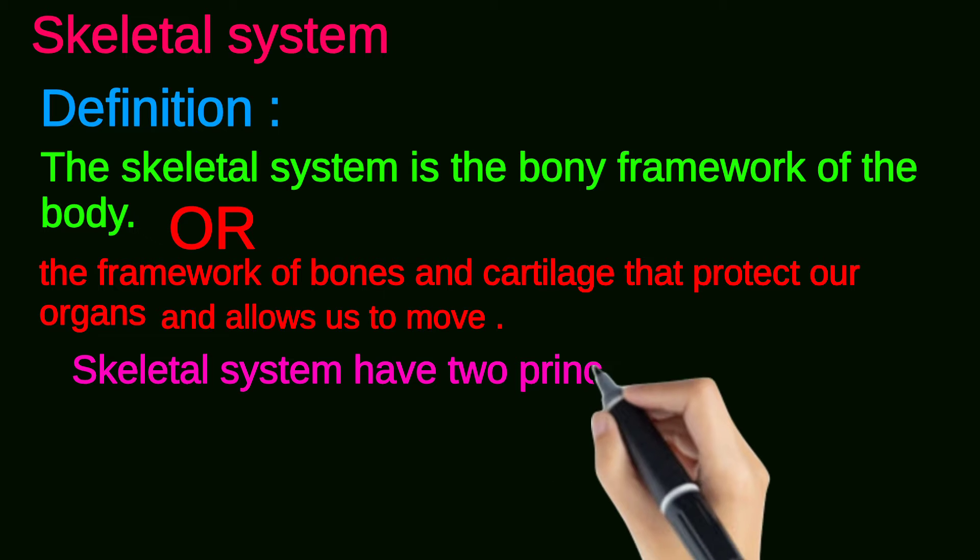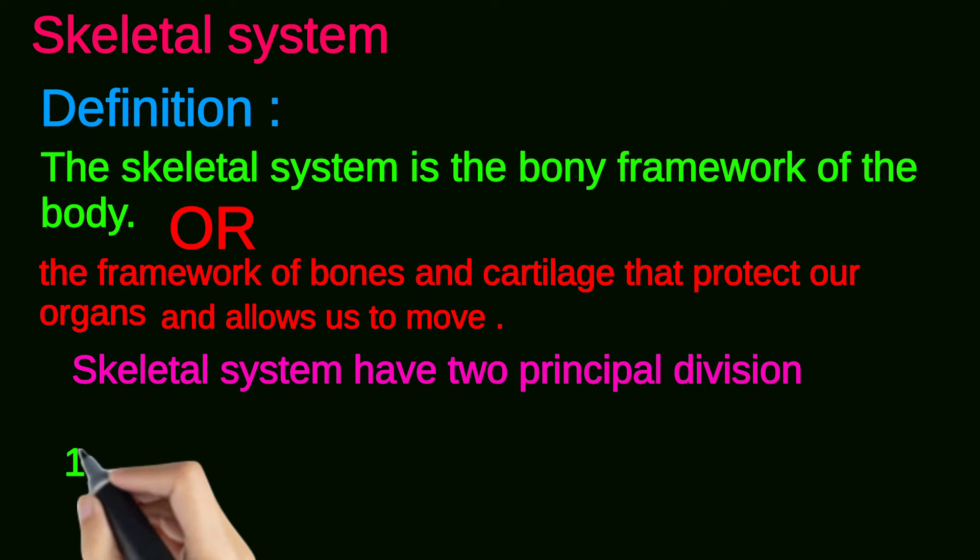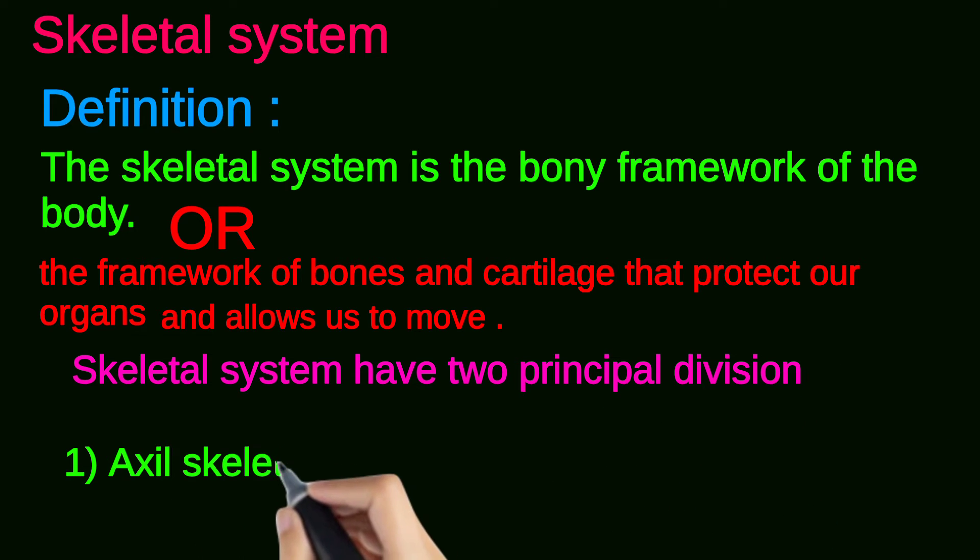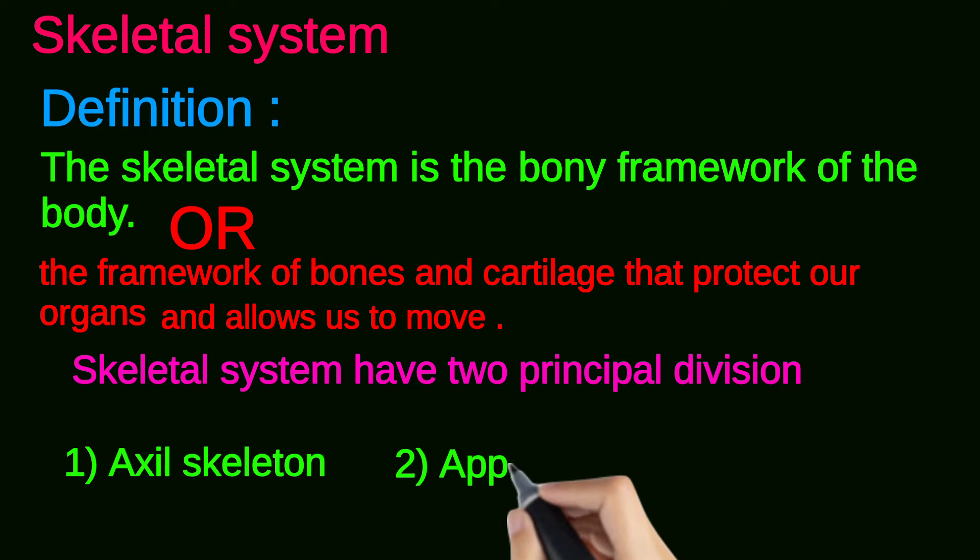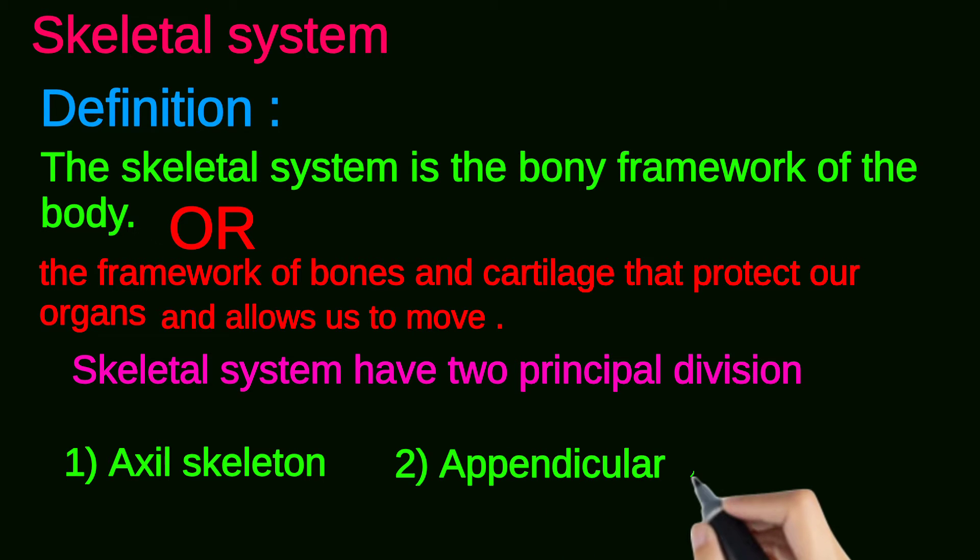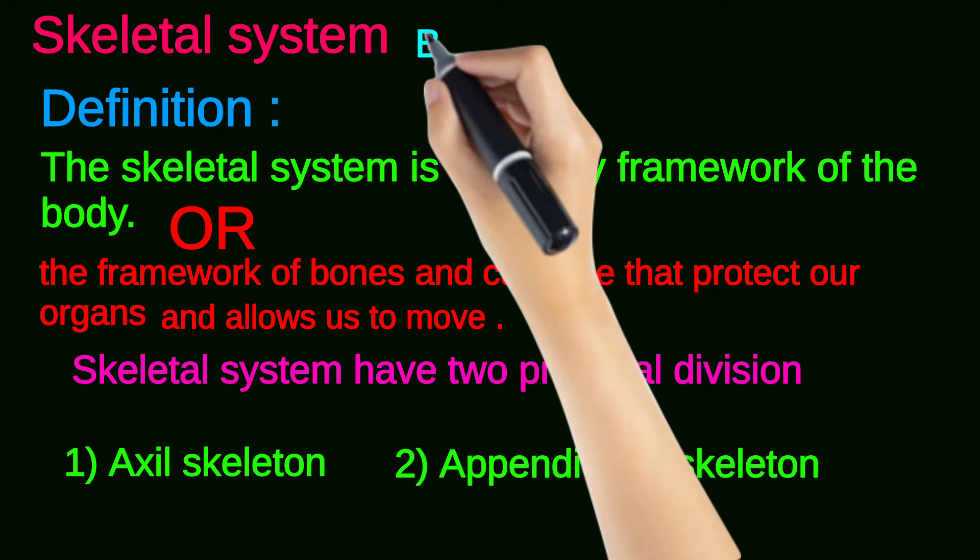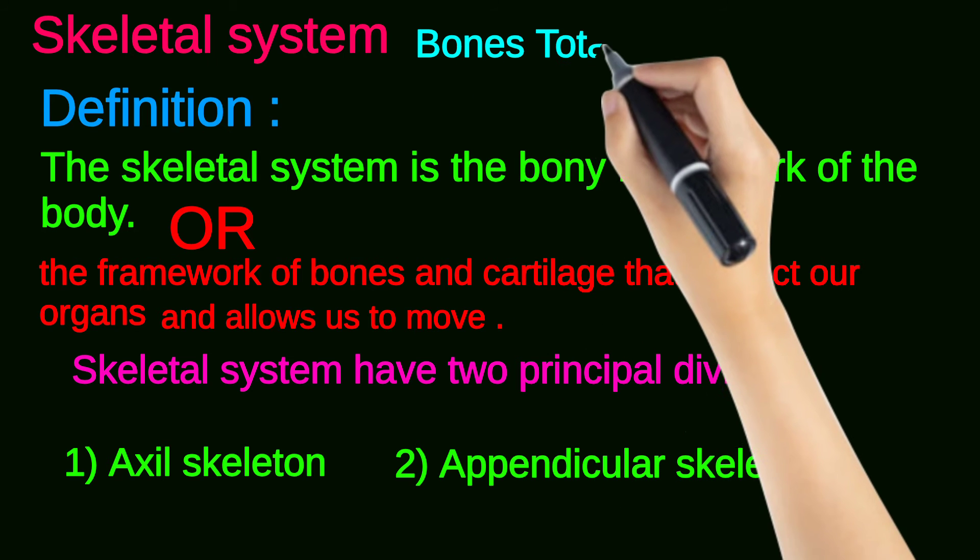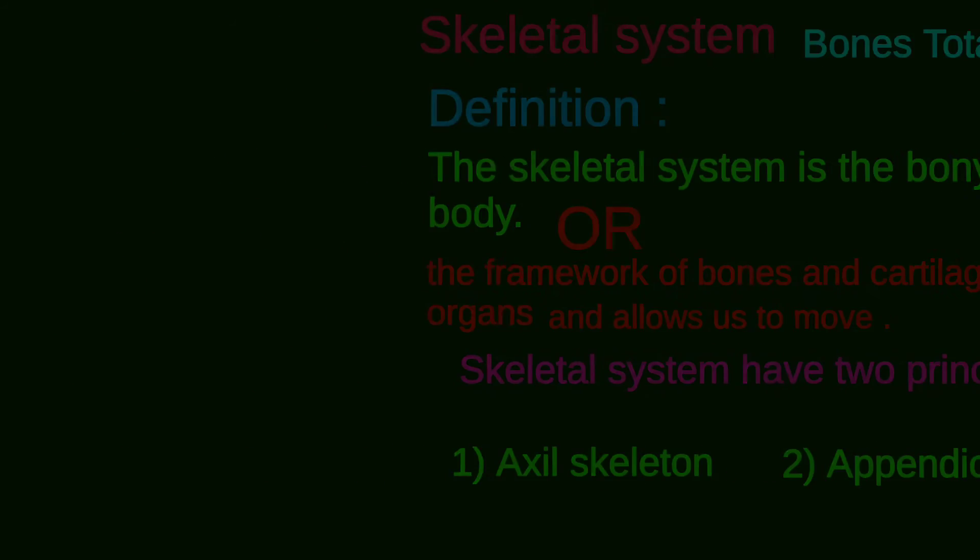Skeletal systems have two principal divisions. The first one is axial skeleton and the second one is appendicular skeleton. The human body has total bones, 206.